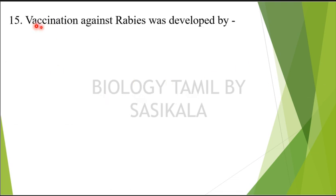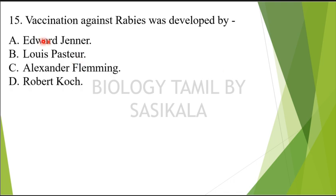Question 14: Vaccination against rabies was developed by whom? The choices are: Edward Jenner, Louis Pasteur, Alexander Fleming, Robert Koch. Edward Jenner — who is he, who is the father? Louis Pasteur — who developed the rabies vaccine? Alexander Fleming and Robert Koch — what are they known for? All answers will be covered in this video.